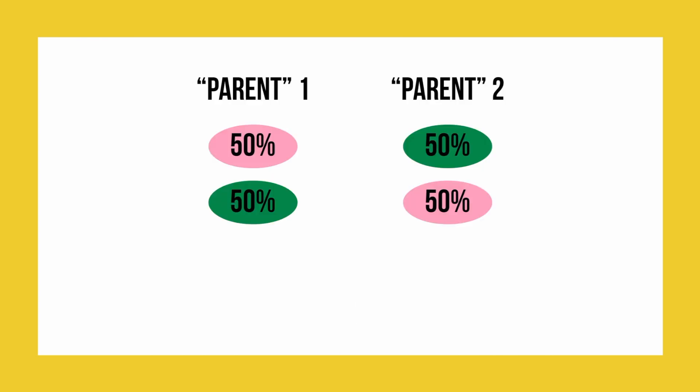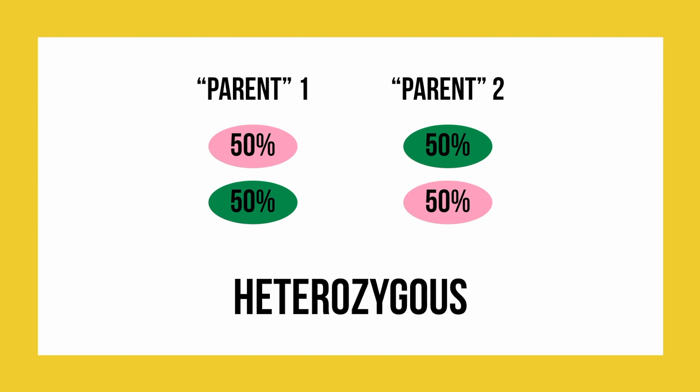In our example, each parent had half pink genes and half green genes. This means that there was a 50% chance of pulling a pink or green gene from each parent's bowl. When an organism has equal parts dominant and recessive gene, it is known as heterozygous. In this case, both parents are heterozygous.